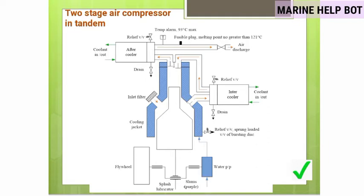The tandem type air compressor uses a double-acting piston where one side acts as the first stage and the other as the second stage. Every cycle involves suction and discharge. Air enters from the inlet filter, is compressed and passed through the intercooler where temperature is lowered, then passes to the second stage, is compressed again, passed through the aftercooler, and received in the receiver.